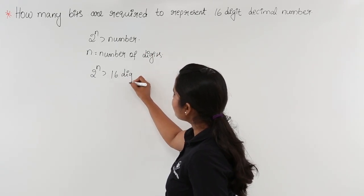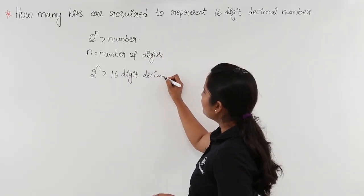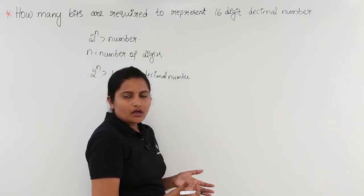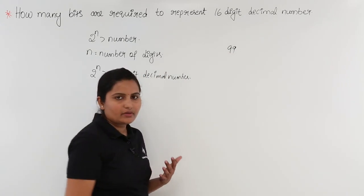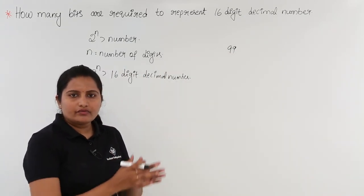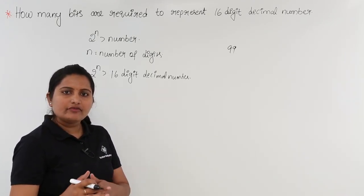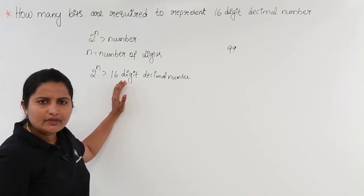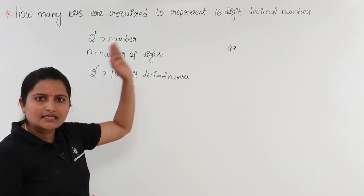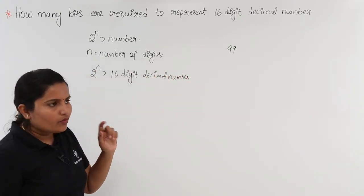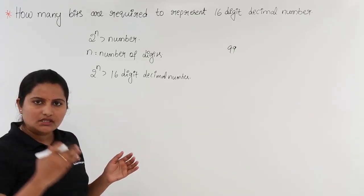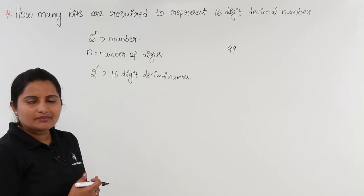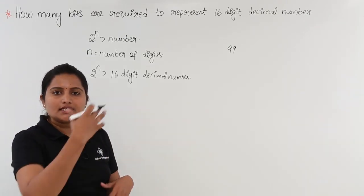The maximum 2-digit decimal number is 99. The reason we use the maximum value is that whatever we define must work for the maximum, and then it will satisfy all minimum values also. If I say only 50 bits are enough, it can't work for the maximum 16-digit number. The minimum 16-digit number starts at 1 followed by fifteen 0s, and the maximum 16-digit decimal number is all sixteen 9s.